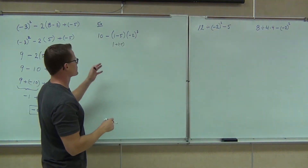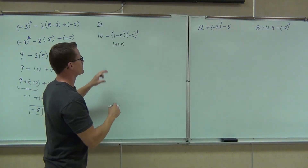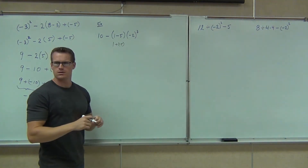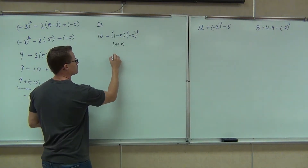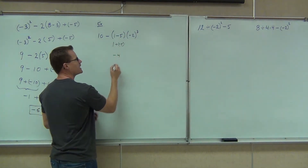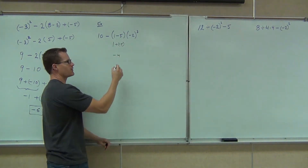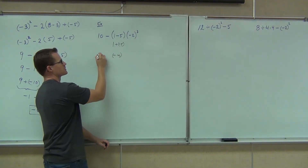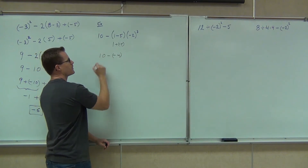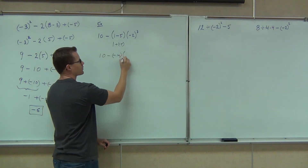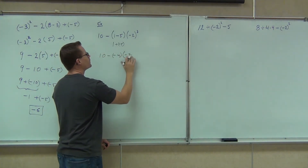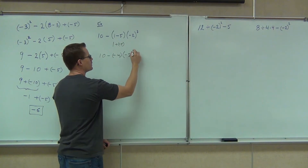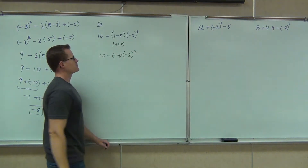Different signs, we're going to get negative 4. And since it's a negative, I'm going to keep it in parentheses. So we now have 10 minus negative 4, negative 2 cubed.